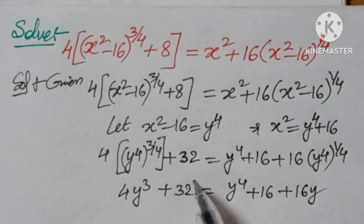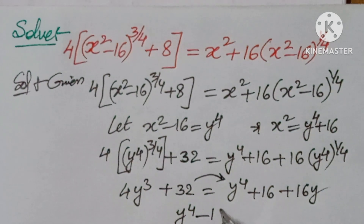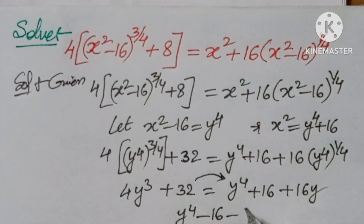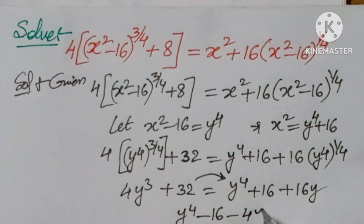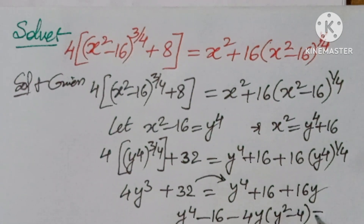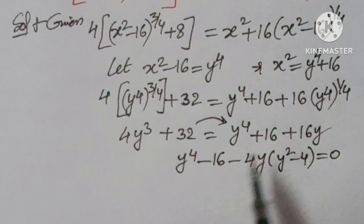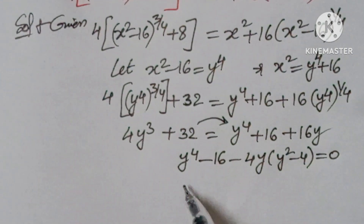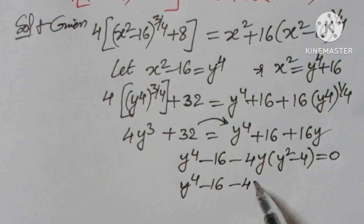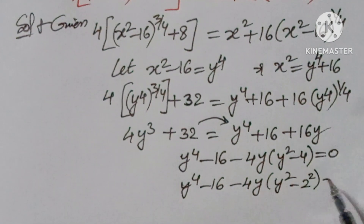Sending all terms to one side, we get y to the power of 4 minus 16 minus 4y into (y squared minus 4) equals 0. If you open the bracket: y to the power of 4 minus 16 minus 4y into (y squared minus 2 squared) equals 0.